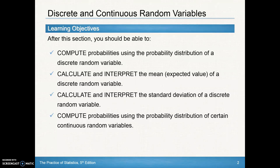Some of the things we'll be learning for the entire section on discrete and continuous random variables: we should be able to compute probabilities using the probability distribution, or probability model, of a discrete random variable. We'll also calculate and interpret the mean, otherwise known as the expected value, and the standard deviation of a discrete random variable. Then we'll pick up the other half of this lesson and compute probabilities using the probability distribution of certain continuous random variables.